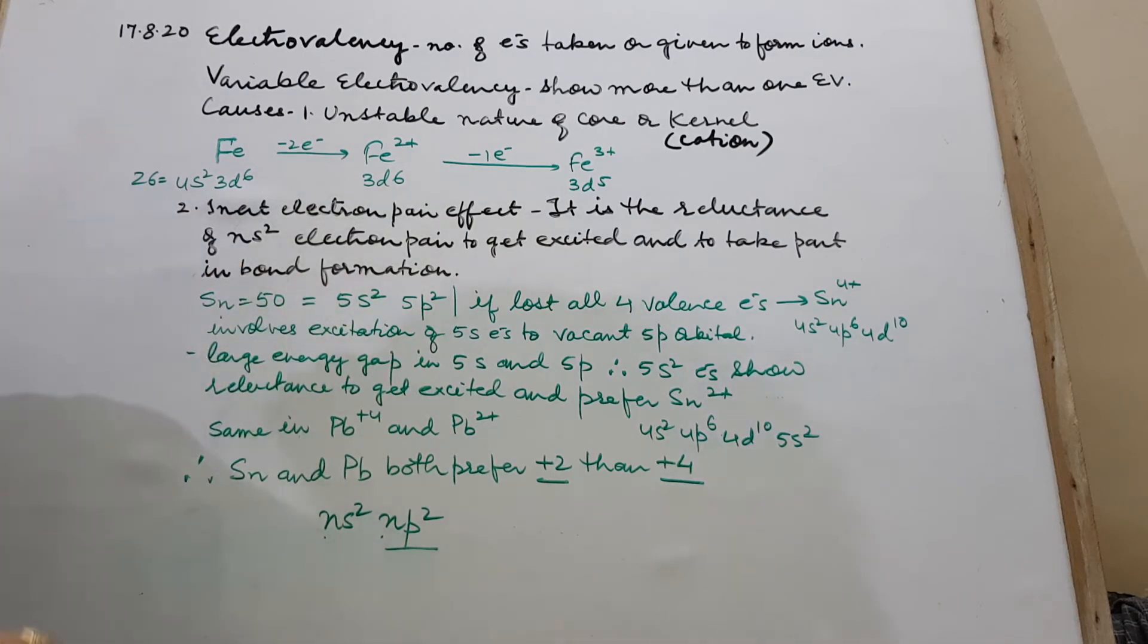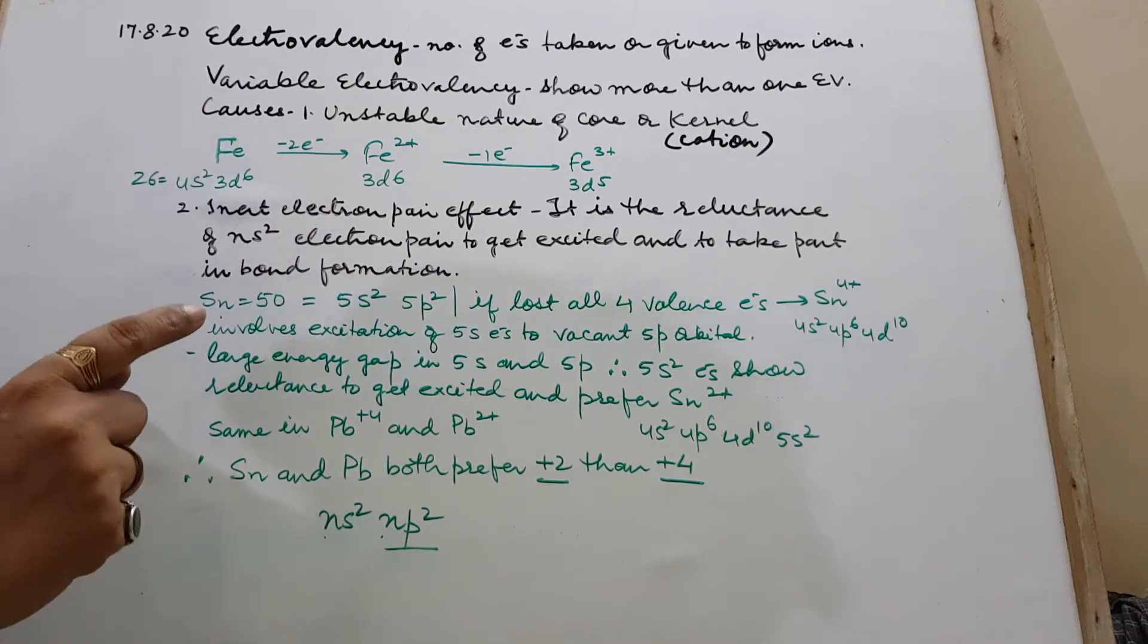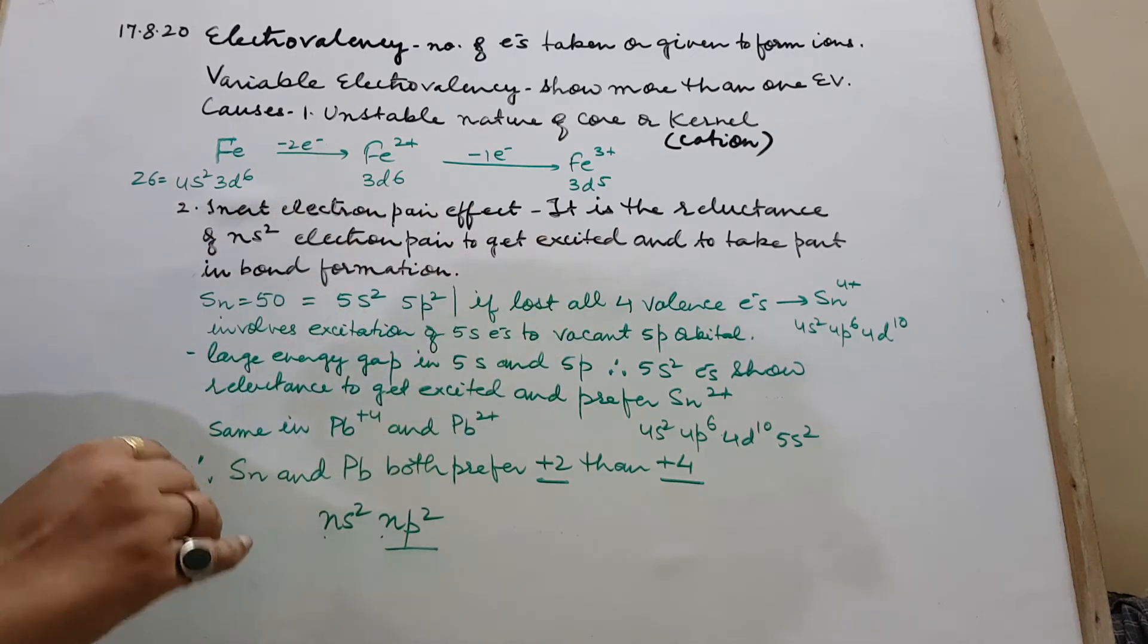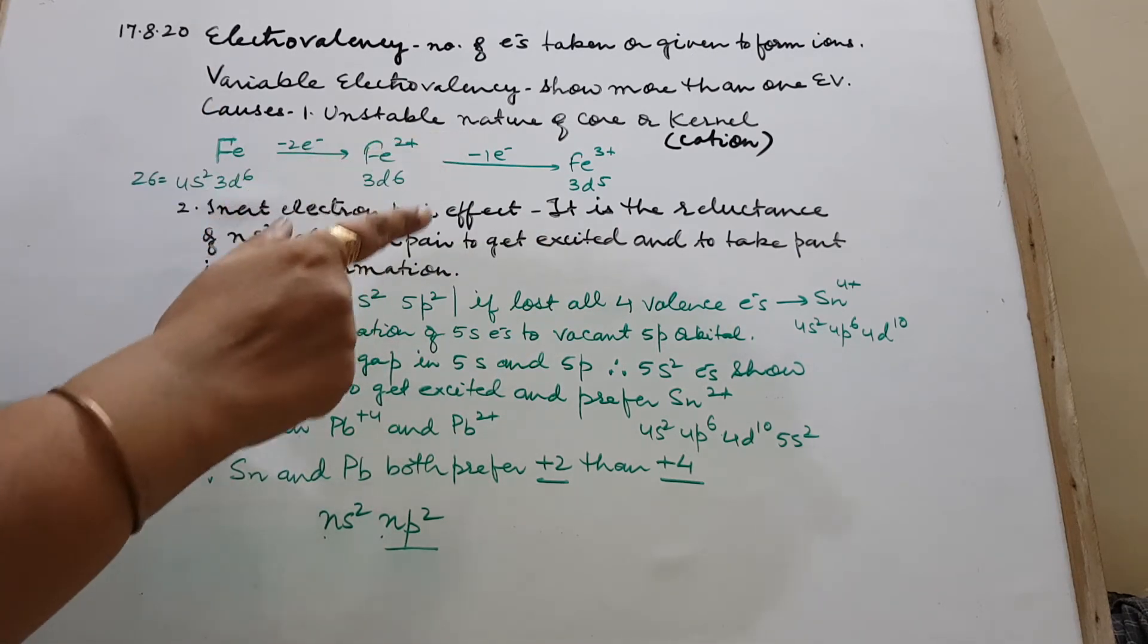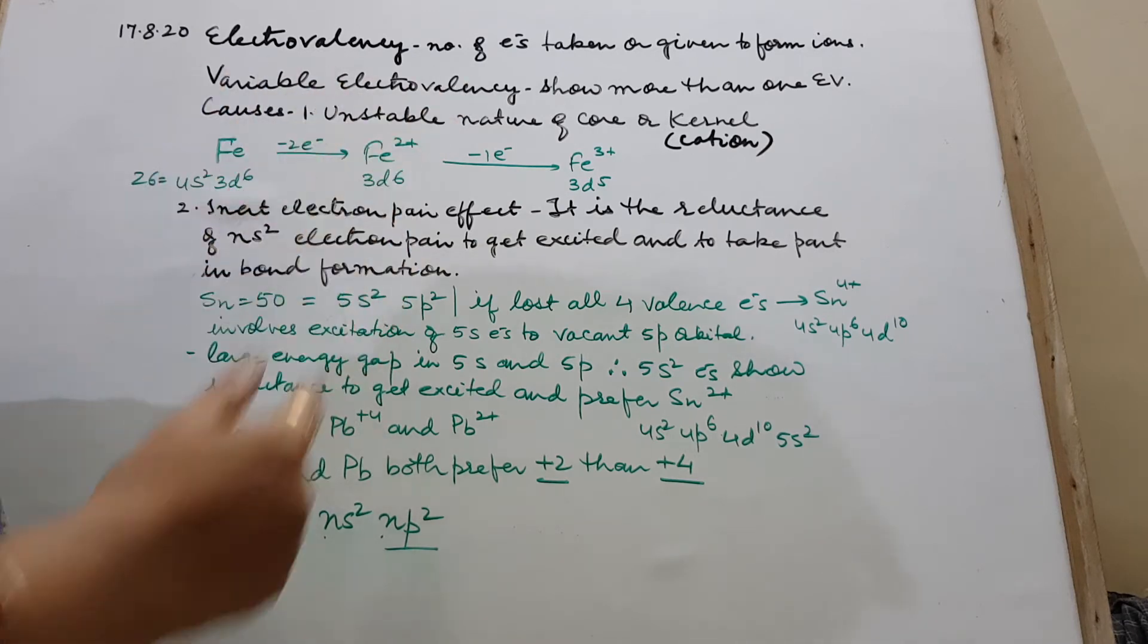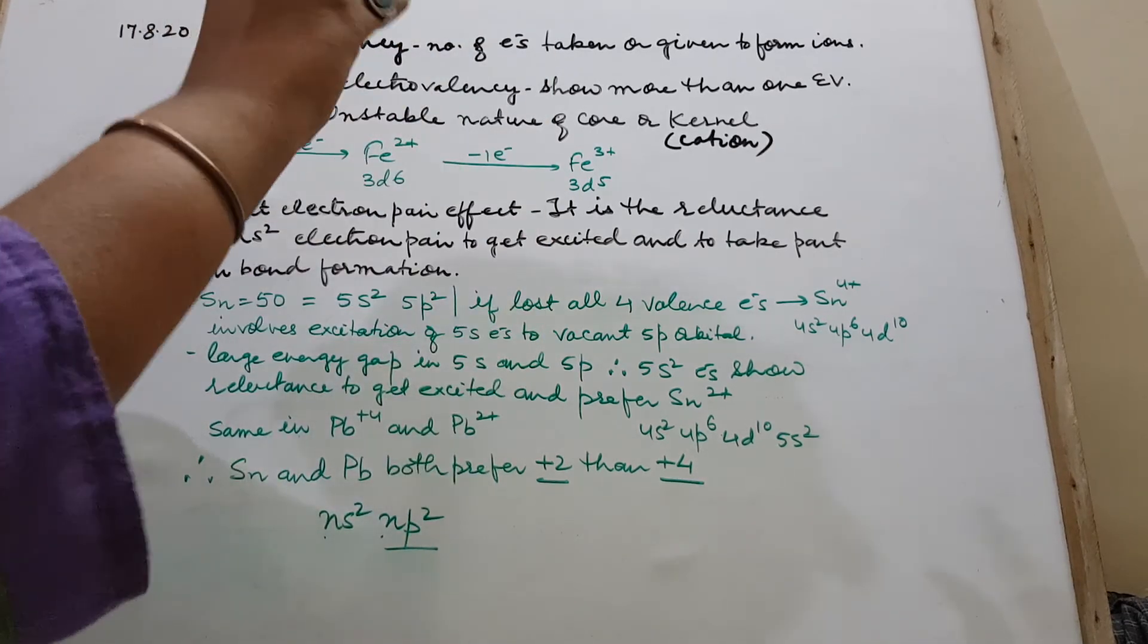If I ask for formula of lead oxide, you will say PbO. PbO means valency 2, electrovalency 2. But then you will say it also forms PbO2 because it has electrovalency or charge plus 4 also. If I say tin chloride, quickly you say the answer SnCl2.